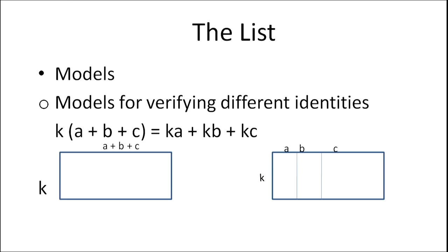Since the larger rectangle has area k(a+b+c), and it is divided into these three smaller rectangles, we can say that k(a+b+c) = ka + kb + kc.